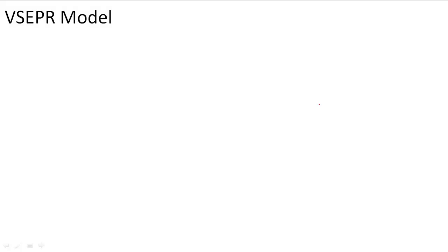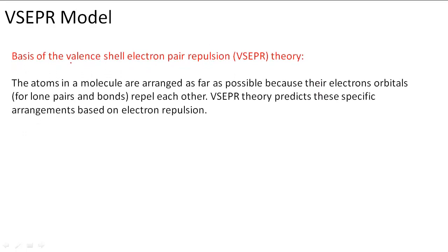The VSEPR model is the valence shell electron pair repulsion theory. That's a really long name, so we shorten it by using the first letter of every word: valence shell electron pair repulsion, to become the VSEPR theory. The VSEPR theory is based on the fact that atoms in a molecule are arranged as far as possible because their electron orbitals for lone pairs and bonds repel each other. The VSEPR theory thus predicts specific arrangements of atoms in a molecule based on electron repulsion.